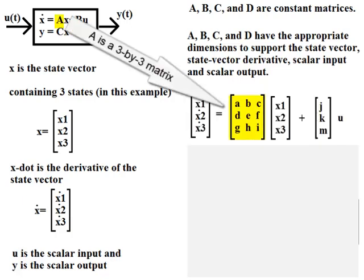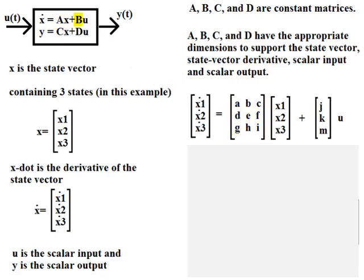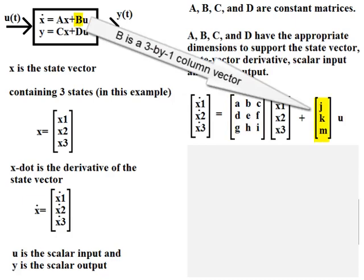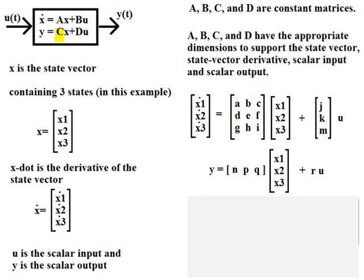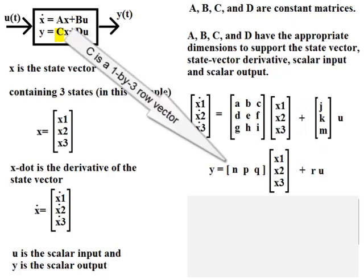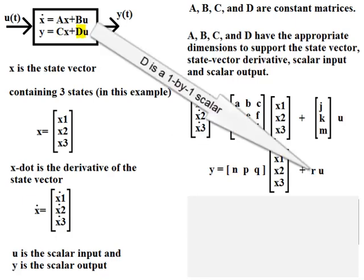A has to be a 3-by-3 matrix. B has to be a 3-by-1 column vector. C has to be a 1-by-3 row vector. D has to be a 1-by-1 scalar.